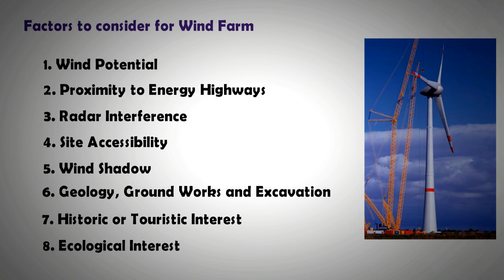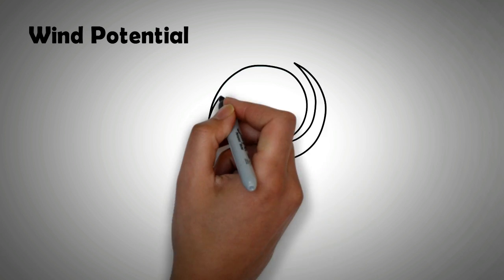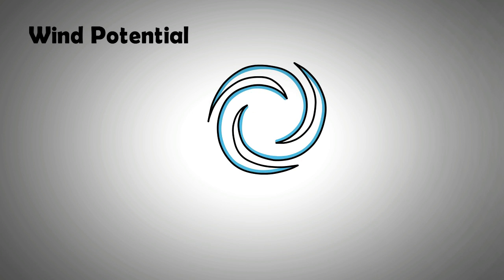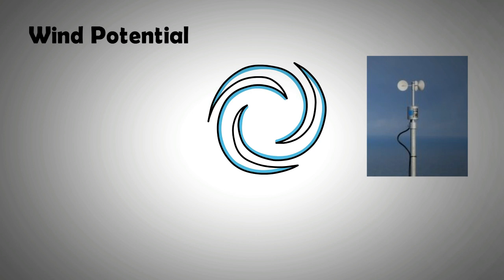The first and foremost thing to consider is the wind potential of a proposed site. The windier the location is, the higher the feasibility of installing wind turbines. Normally, a year-long study is carried out using data obtained from weather stations or met masts installed on the site before any area is considered suitable for a wind farm. The information regarding wind speed and direction is then recorded and analyzed.